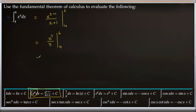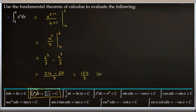Next we plug in the values. When x is 6 we have 6³ over 3, and when x is 4 we have 4³ over 3. So we have 6³ minus 4³, all divided by 3. 6³ is 216, 4³ is 64, and 216 minus 64 is 152. So we get 152 over 3, which in decimal form rounded to two decimal places is 50.67.